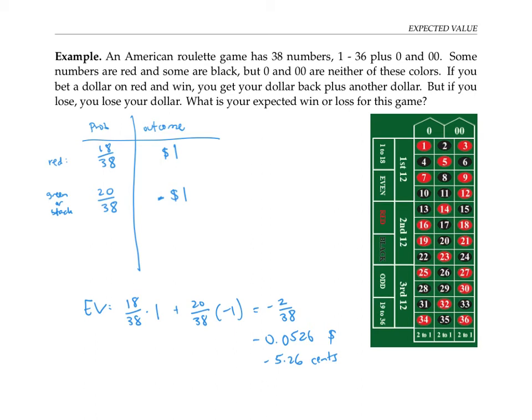Notice that without the zero and double zero squares, if those didn't exist, then your probabilities would be 18 out of 36 or one half and 18 out of 36 or one half for not getting red. In that case, your expected value would be one half times one plus one half times negative one or exactly zero, and it would be a fair game. Of course, casinos wouldn't ever run a game like that, because they're in the business to make money.